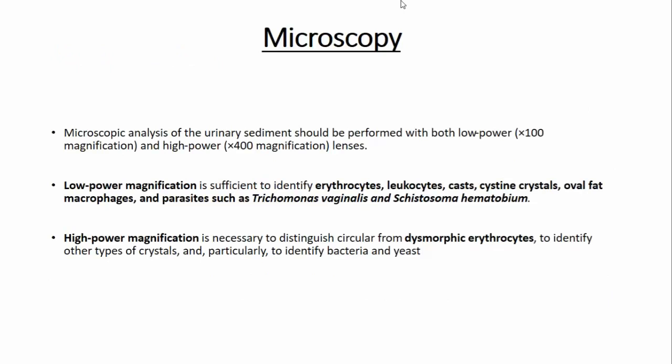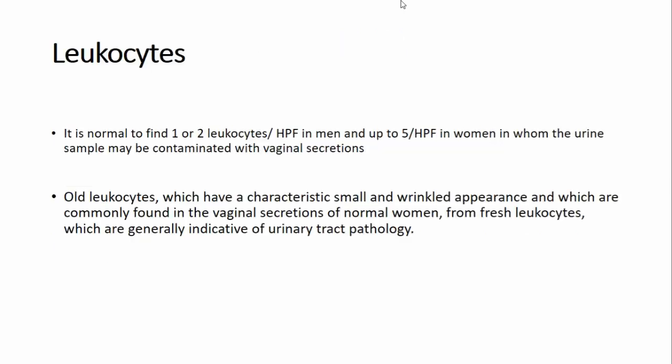To confirm dipstick findings, you go for microscopy of the sample. In microscopy there are two magnifications: low power and high power. On low power, you can see erythrocytes, leukocytes, casts, crystals, or parasites. On high power magnification, you can see dysmorphic erythrocytes, which is important in cases of glomerulonephritis.